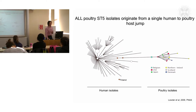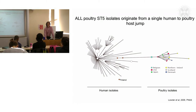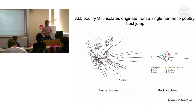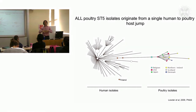They're most closely related to a human ST5 sub-lineage that was circulating in Polish hospitals back in the 1980s. Based on this tree and an understanding of other mutations in genes leading to loss of gene function, we infer that the most likely scenario was a single human-to-poultry host jump event, after which that strain adapted to colonize poultry and then spread among other poultry populations.